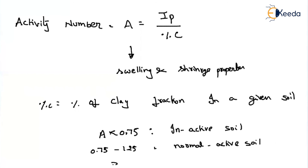If this activity number is greater than 1.25, then it is a highly active soil. We have to find out these values — they will give you the plasticity index and also the percentage clay fraction, or sufficient data to find those two values. Depending upon the result, we select whether it is an inactive soil, normal active soil, or active soil — with thresholds at 0.75 and 1.25. In the next video, we will start solving numericals based on the index properties. Thank you.